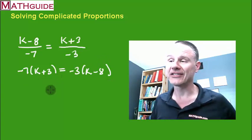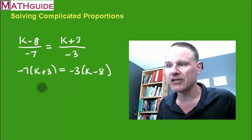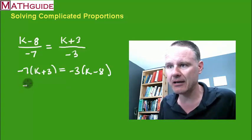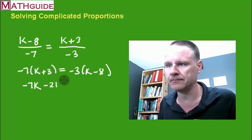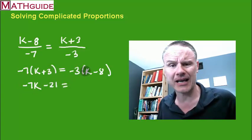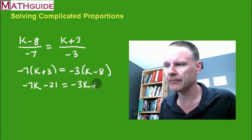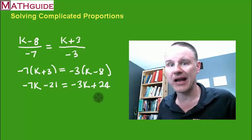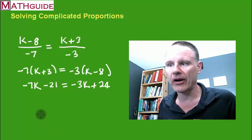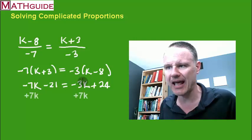Alright now it's just a matter of can we do the algebra correctly. So let's do the distributive property. Negative 7 times k. Negative 7 times 3. Let's do negative 3 times k. Negative 3 times negative 8. So far so good. Okay so now what do we do? Well what I want to do is get rid of one of these k's since I've got k's on both sides. So I'm going to add 7k to both sides.